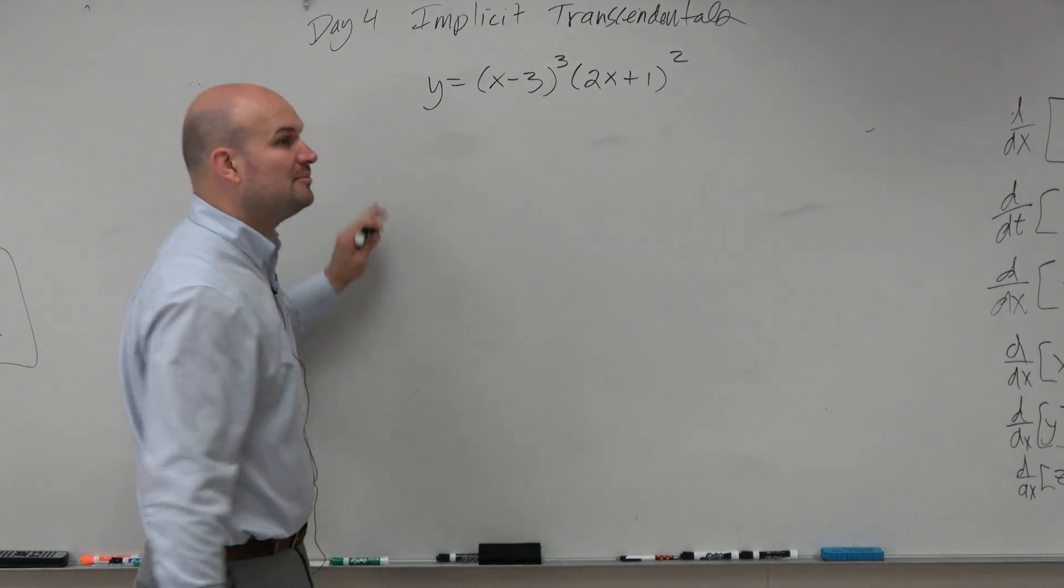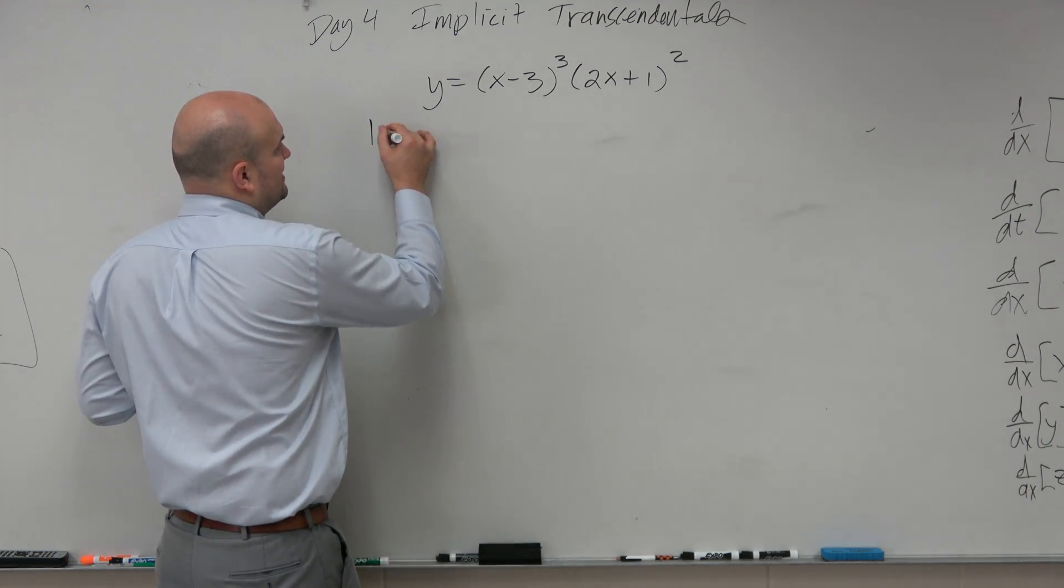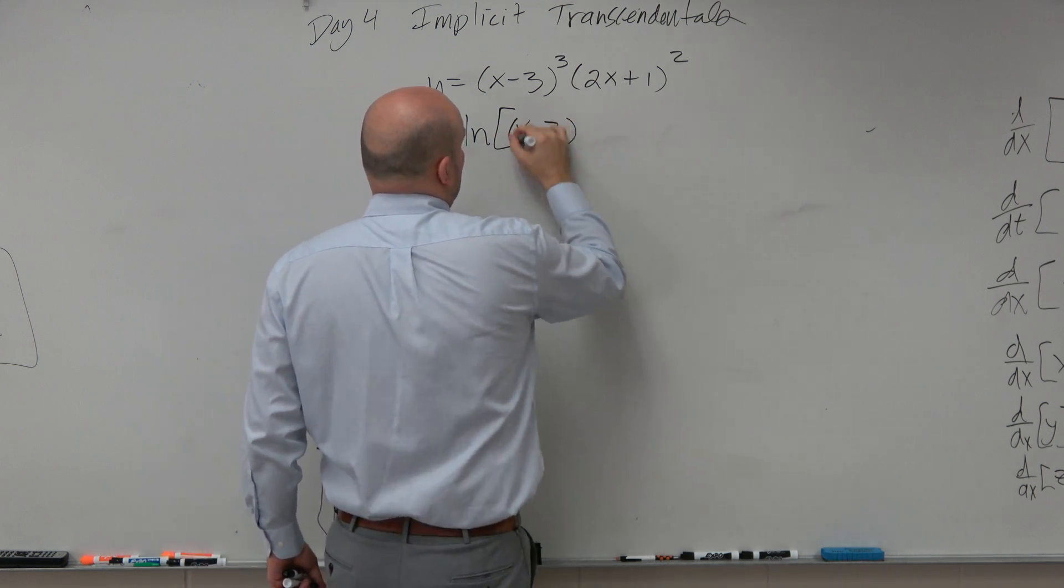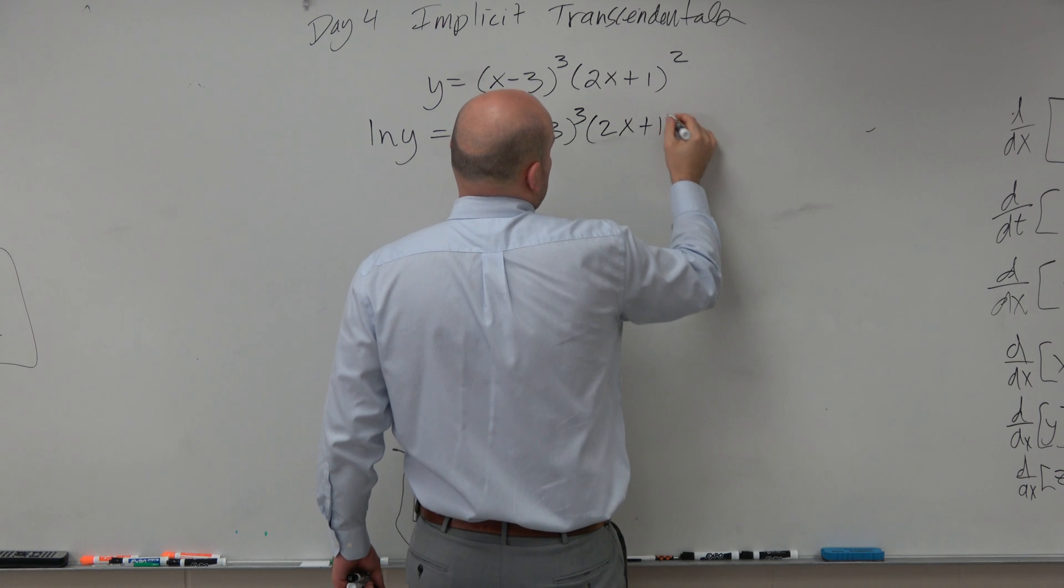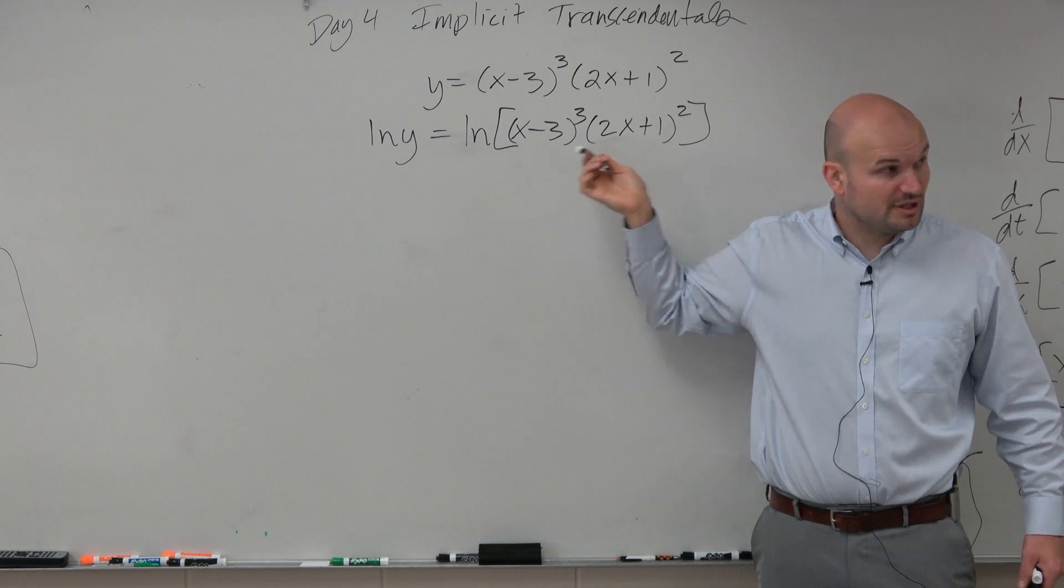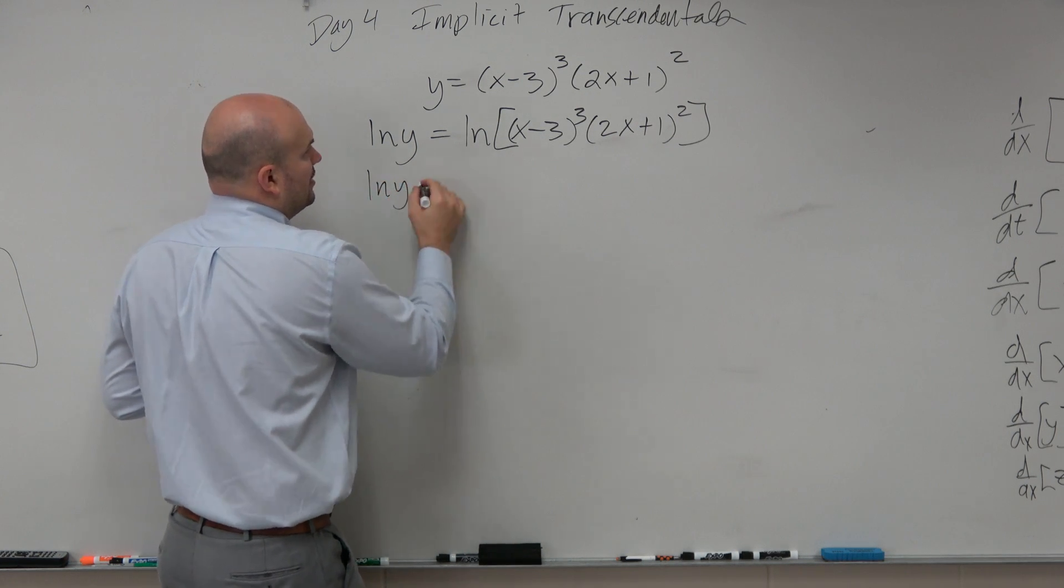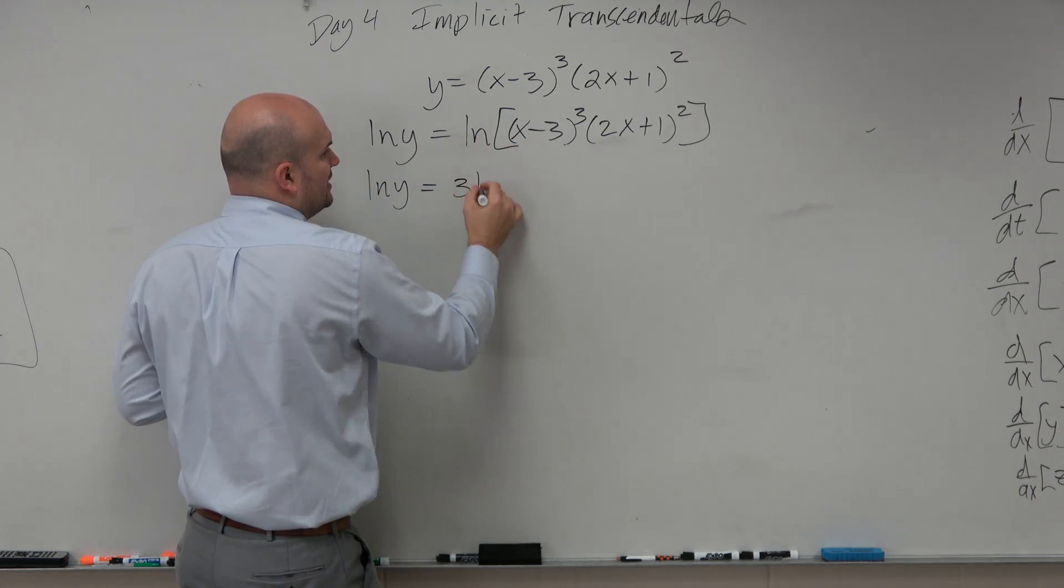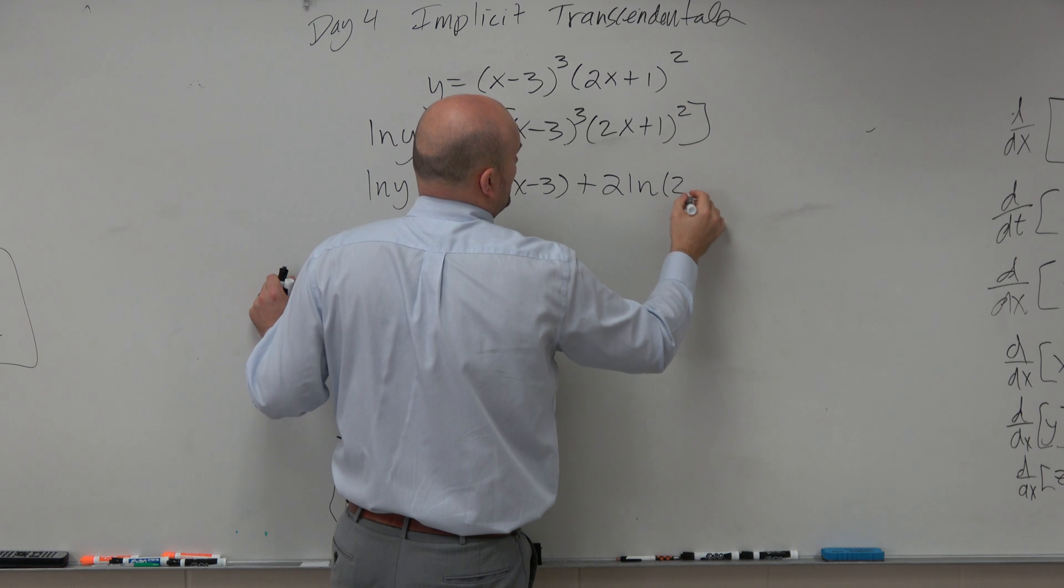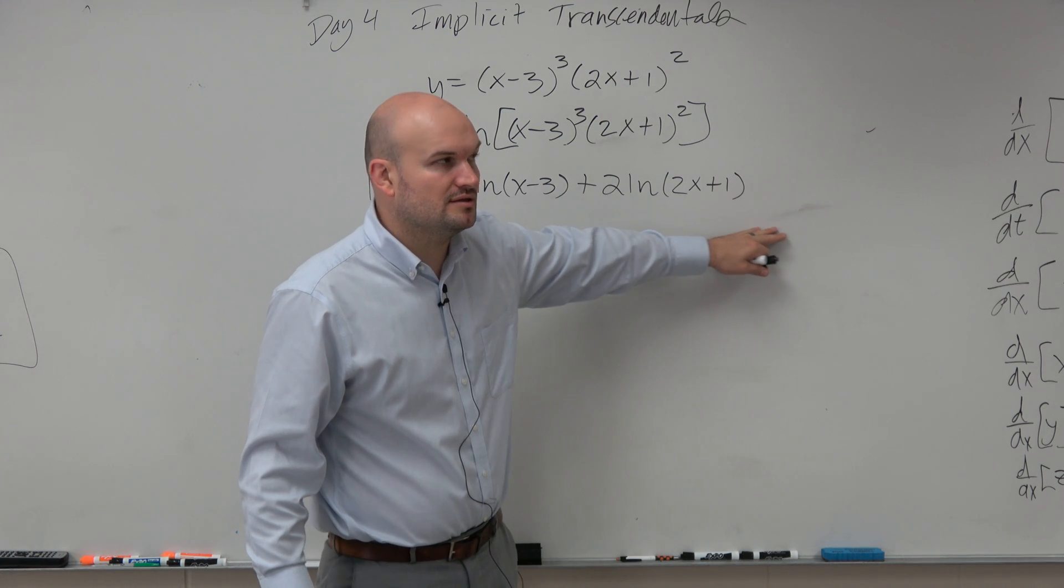Well, here's another case we're taking the ln on both sides. We don't really want to do the algebra over here. It's not really going to be that fun. But I can also take the ln of both sides. Now the reason why I'd want to do that is because we really want to use those rules of logarithms here. That's really, really helpful. So if I'm using the rules of logarithms, ln of y equals bring down the exponents. So I have 3 ln of x minus 3 plus, bring down the exponent, 2 ln of 2x plus 1. This, again, makes it a lot easier to find the logarithm.